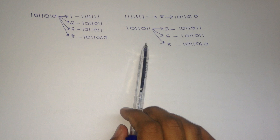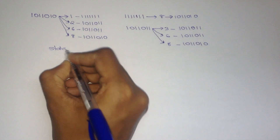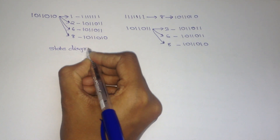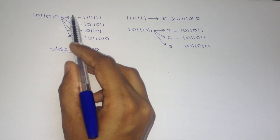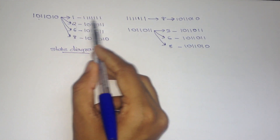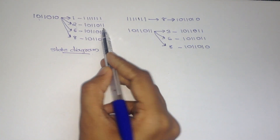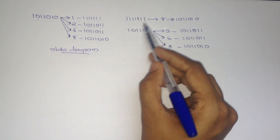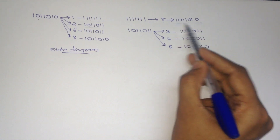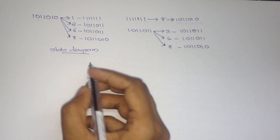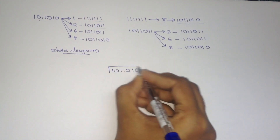Now we can draw the state diagram. This is the new state, and these are the stages at which new states occurred. We have to draw the initial collision vector and mark all these stages.